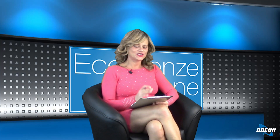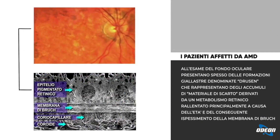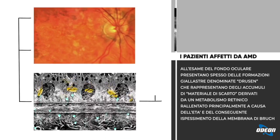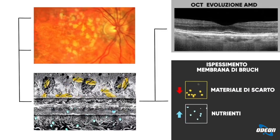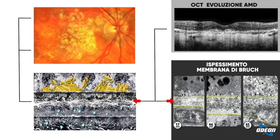Come si sviluppa una degenerazione maculare senile? Al centro dell'occhio abbiamo una struttura che si chiama macula, molto sottile, con dei fotorecettori che si chiamano coni, e anche bastoncelli che sono più in periferia. Questi fotorecettori sono basilari per la nostra vista e vengono nutriti da una rete di vasi chiamata coriocapillare, attraverso una membrana chiamata membrana di Bruch. Con l'età e la predisposizione genetica, questa membrana si ispessisce e i depositi di scarto rimangono, formando macchie gialle chiamate druse, che atrofizzano la zona e privano la retina di nutrimento.